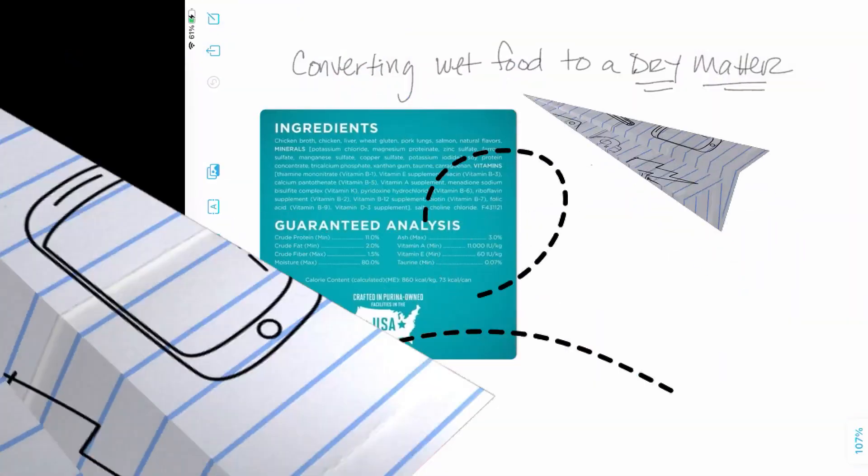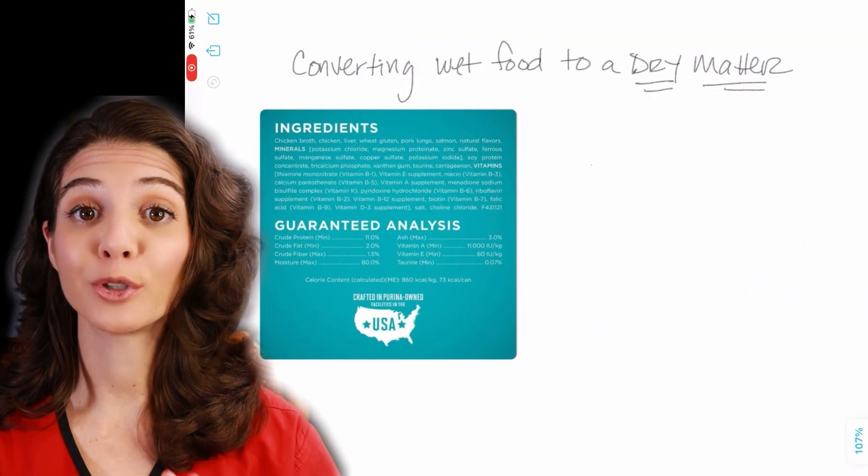Dry foods are going to be around 20% moisture or less, as listed on the guaranteed analysis. A canned food is going to be like 80% moisture. So in order to compare those we have to remove the moisture. To do that there is a very simple calculation — I promise I'm going to make this very simple, and then you can compare your favorite canned foods to dry foods and to the standards.